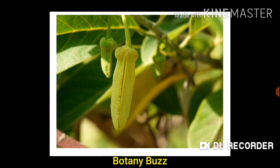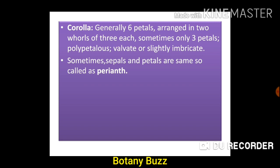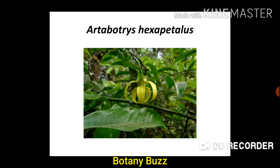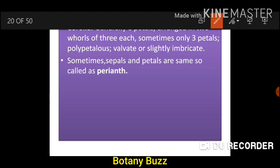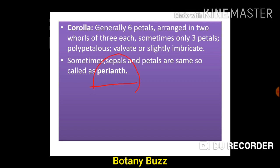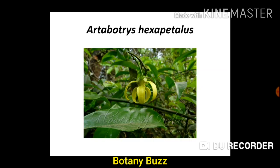Coming to corolla: generally six petals arranged in two whorls of three each, sometimes only three petals. Polypetalous, meaning petals are free. Valvate or slightly imbricate aestivation. Sometimes sepals and petals are indistinguishable, so they are called perianth. When we cannot distinguish sepals and petals, that is designated as perianth. This is Artabotrys hexapetalus flower, showing six petals arranged in two whorls — outer whorl of three and inner whorl of three. The species name hexapetalus: hexa means six.